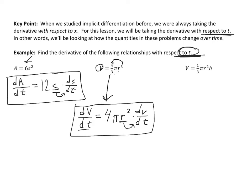So that gives us the relationship between the derivatives dV/dt and dr/dt. For the third example, notice that on the right-hand side there are two variables — r and h — multiplied together. So I need to use the product rule on the right-hand side, and because those variables aren't t, I'll also need the chain rule. Pause the video for 30 seconds and try writing down what this derivative should be.